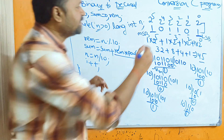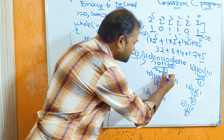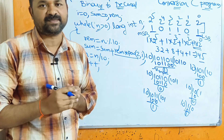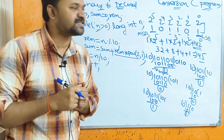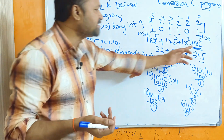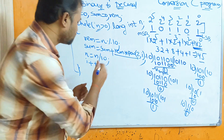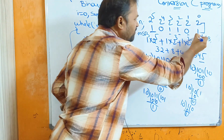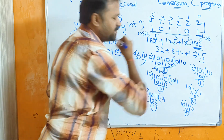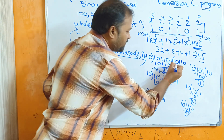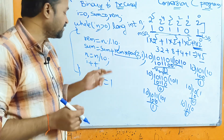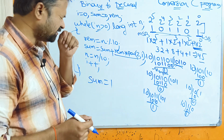So sum = sum + rem × pow(2, i). In the first iteration, rem is 1 and i is 0, so we compute 1 × 2⁰ = 1, which is added to sum — giving sum = 1. Then to process the remaining bits, we perform n = n / 10, which gives the quotient and removes the last digit.